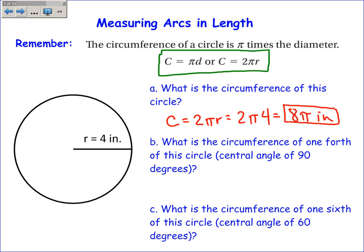What is the circumference of 1 fourth of this circle? Meaning, this arc right here, this minor arc, what is the length of this arc? Well, it's 1 fourth of the circumference. So I will find 1 fourth times the circumference. Now, I just found the circumference is 8 pi. And I'll leave my answer in terms of pi. So, 1 fourth of 8 is 1 fourth times 8, which is 2. So it's 2 pi inches.